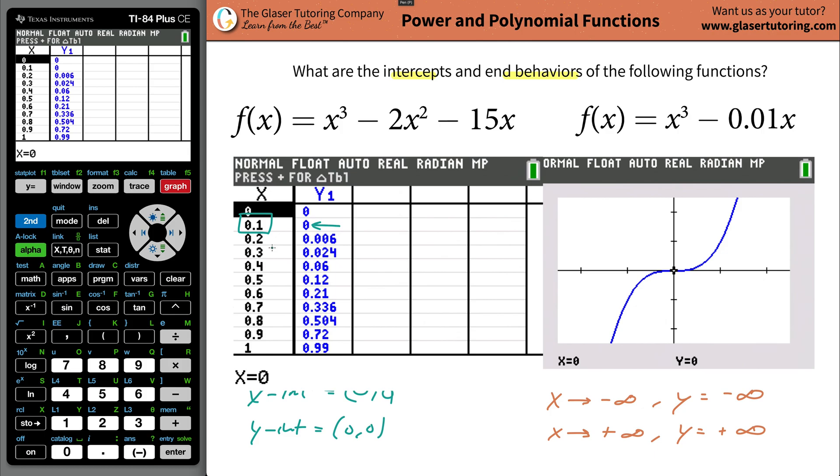This is sometimes the limitations of using the calculator, though. You might say, well, how am I supposed to know that? When I look at this graph, it doesn't look like it's going to cross again over here at point one. It does not at all. How would I know to zoom in? I agree. I don't think it's the best way to use the calculator on this particular problem.